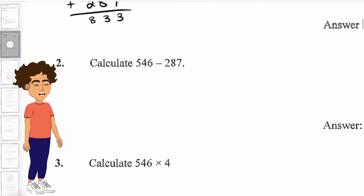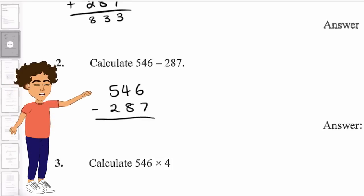Over to question two, we've got 546 minus 287. We'll go for the column method here. Remember, we always start from the right hand side.